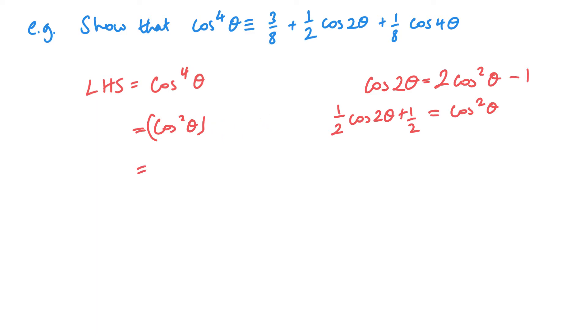Okay, I'm just going to write it as squared. So this is now a half cos 2 theta plus a half squared, and I need to expand this bracket.